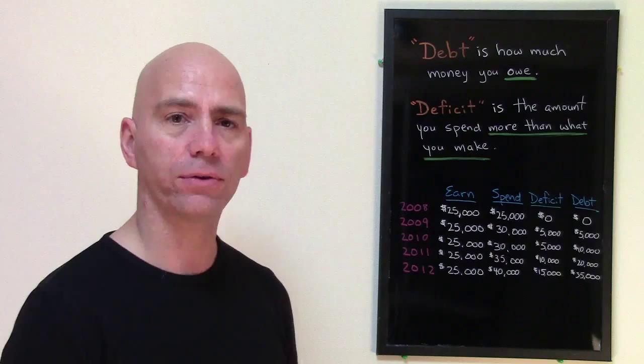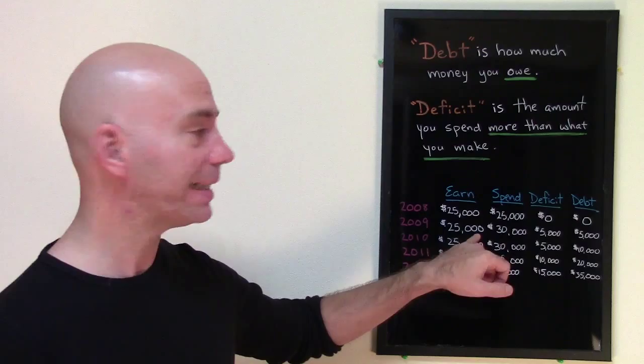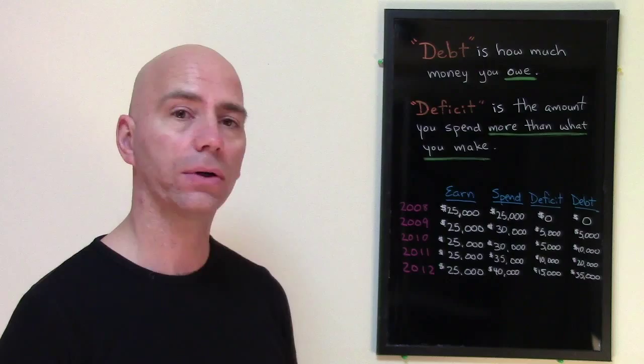Now to spend $30,000 is $5,000 more than what you made, so you had to borrow $5,000. For this year you had a deficit of $5,000, because you spent $5,000 more than you made. And now you have a debt of $5,000.